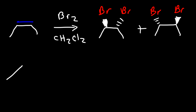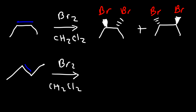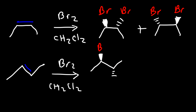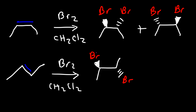Now what if we have trans-2-butene instead of cis-2-butene? How would that affect the stereochemistry of the products? We know that one bromine atom is going to be on the wedge and the other on the dash, since it's an anti-addition reaction. Let me redraw this molecule — I'm going to flip this bond. So right now we have a bromine atom on the wedge coming out of the page and one on the dash going into the page.